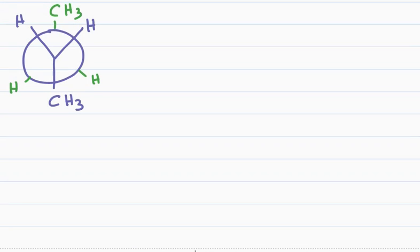We'll start with the staggered anti-conformation for butane. When the conformation is in the anti-position, you have your two largest groups as far away from each other as possible, making it the most stable conformation.